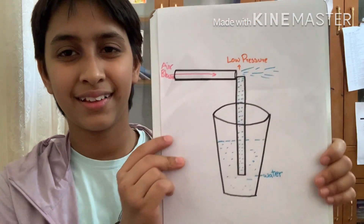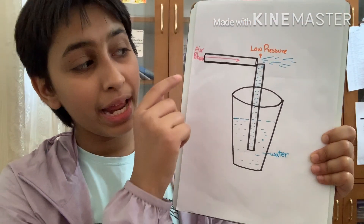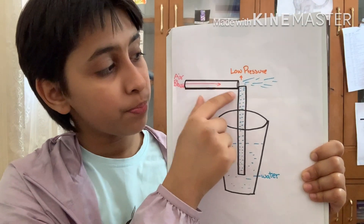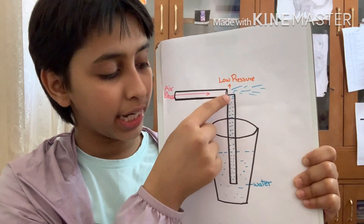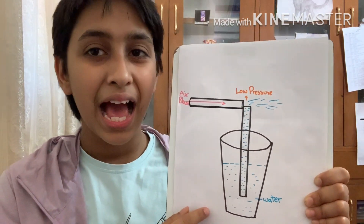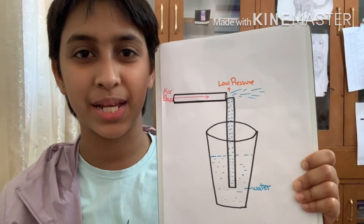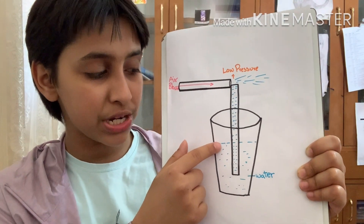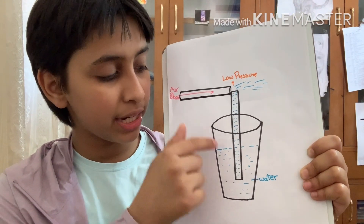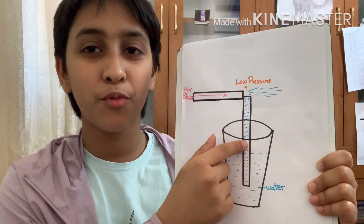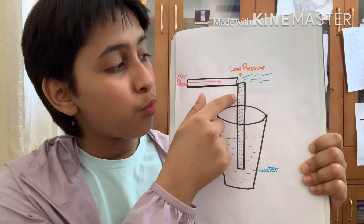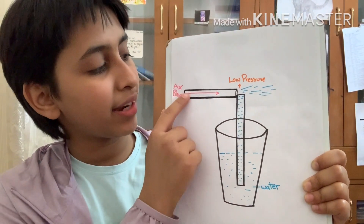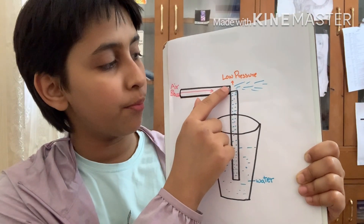You must be wondering why this is happening. Well, when I blow air through this straw, a low pressure area is being created. As we know, fluids move from high pressure to low pressure. The atmospheric pressure is pushing down on the water, causing it to move up the straw, and the water is being directed by the air that I blow, creating a sprinkling effect.